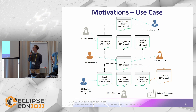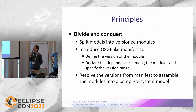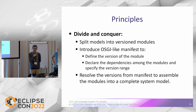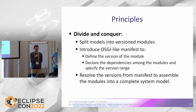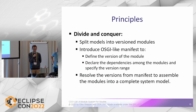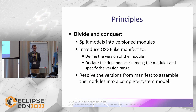The motivation, based on this complex modeling scenario, is how we can work together in collaboration. The first principle we tried to apply was a divide-and-conquer strategy: split the models into versioned modules, introduce OSGi-like manifests to define the version of the module and declare dependencies among those modules together with version ranges, and ultimately rely on a resolver to assemble all those modules into the complete system.